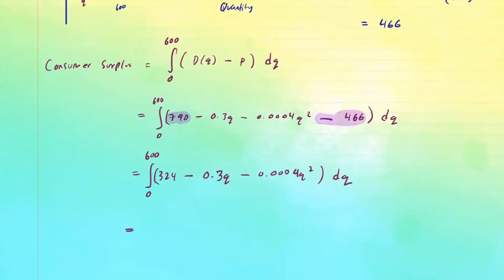So the integral of 324 with respect to q, that's 324q. Then the integral of 0.03q, that's going to be negative 0.03q squared over 2, and minus 0.0004q cubed over 3.